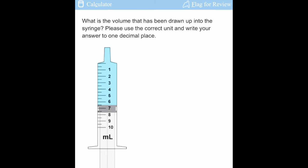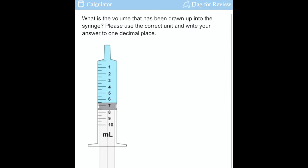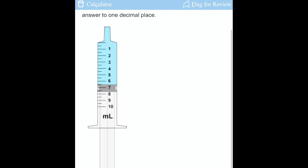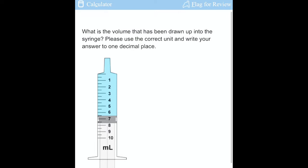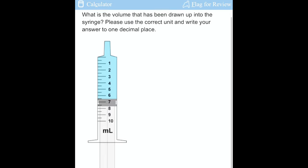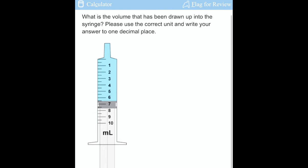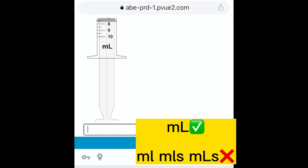This question is asking us to provide the number of volume that has been drawn and write it to one decimal place. From here I can see that it's 6.5. Let's enter it into the box. Whilst entering, be checking the way I write the units. You realize that I make the L capital - that's very important if you want to pass your numeracy.